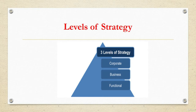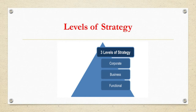At the functional level, strategy is formulated to utilize the business unit level goals and objectives using the trends and capabilities of the organization. There is a clear hierarchy in levels of strategy, with corporate level at the top, business level strategy being derived from the corporate level, and functional level strategy being formulated out of the business level strategy. These are the three levels: corporate strategy, business unit level, and functional level.